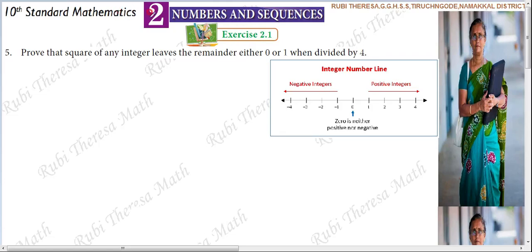So, we are doing exercise 2.1 based on Euclid's Division Lemma and Algorithm. We already posted an introduction video on the concept, so watch that first. Now let's look at the problem: prove that the square of any integer leaves the remainder either 0 or 1 when divided by 4.